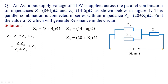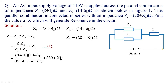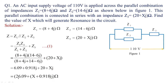Substitute the values given in rectangular form in your calculator. Arrange your calculator in complex mode and substitute the values of Z1·Z2 divided by Z1 plus Z2, plus Z3. Wherever you find J, replace it with Shift I in your calculator. When you substitute these values, you get Z equal to 26.09 plus x plus 0.918j ohms. This is the reactive component and this is the real value.